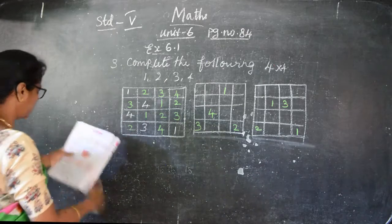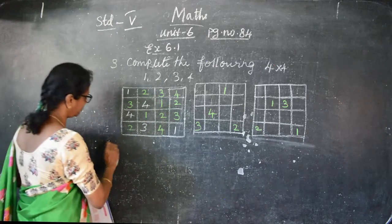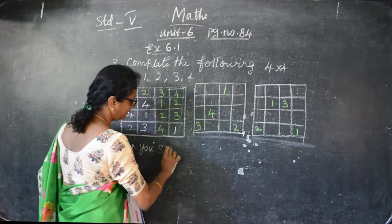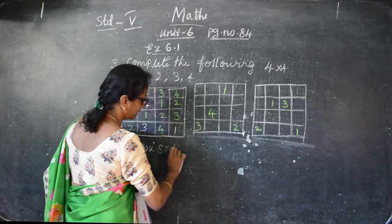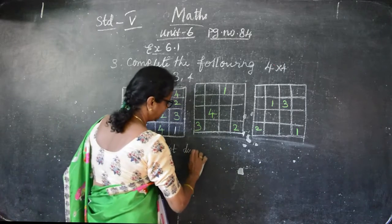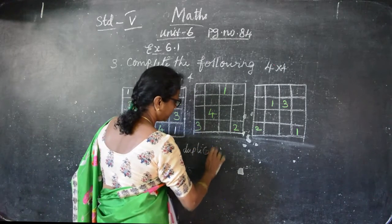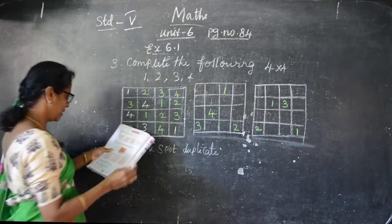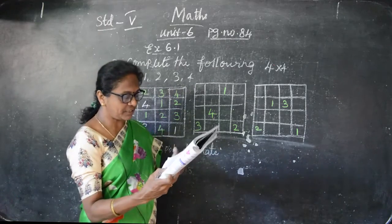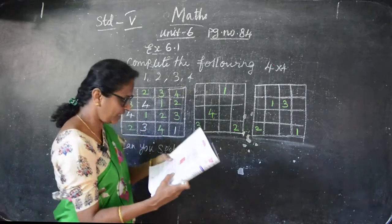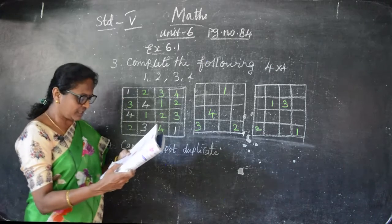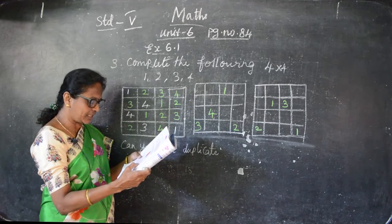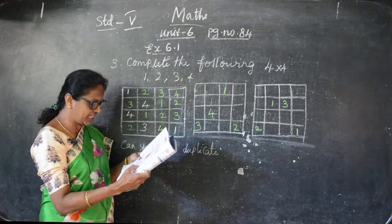Then fourth one - can you spot the duplicate? They are given some letters. You have to find out the duplicate words - the same words should not be repeated. They are given DEF, EFD, FDE, EFD, FED, DFE, and EDF.